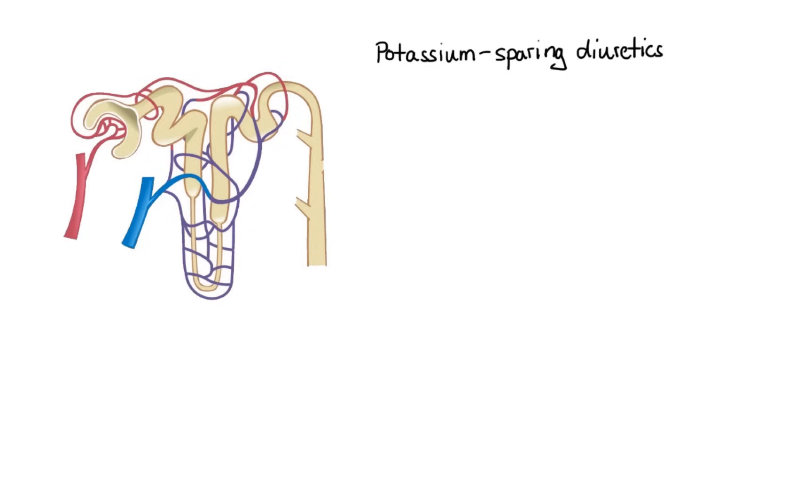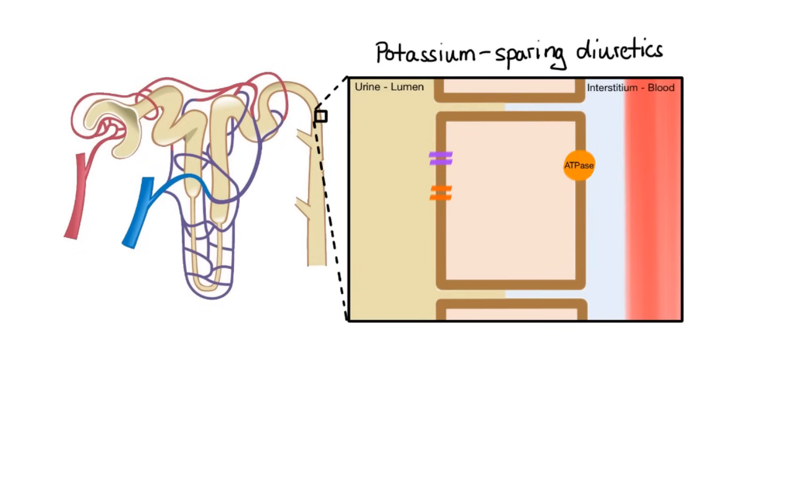Now let's zoom in on the collecting tubule principal cell to see what exactly happens there. The principal cell has separate channels for sodium and potassium, as well as sodium-potassium ATPase on the basolateral side. Under normal conditions here, sodium enters the cell through sodium channel and then is transported by sodium-potassium ATPase into the bloodstream in exchange for potassium. Because this sodium entry predominates here, the lumen-negative electrical potential is generated and chloride is driven into the bloodstream through paracellular pathway. This in turn drives potassium out of the cell through potassium channel.